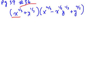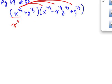So x to the one-third times x to the two-thirds, times x to the one-third y to the one-third, times y to the two-thirds. That gives us x to the one-third times x to the two-thirds, which equals x to the first power, because one-third plus two-thirds equals one. So our first term is simply x.